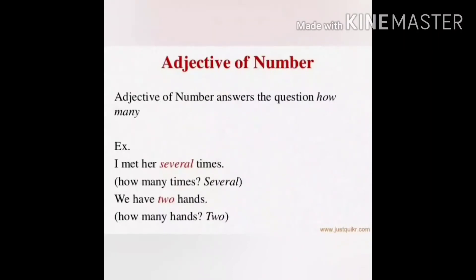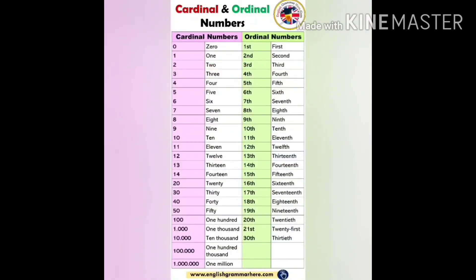Distributive adjectives are used to refer to a person or thing separately. For example: 'each student was given a kit' and 'neither of them is friendly.' The words 'each' and 'neither' are distributive adjectives, as they are pointing out a person separately.